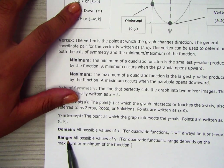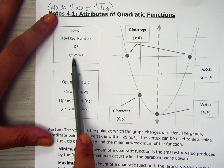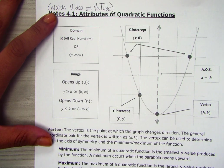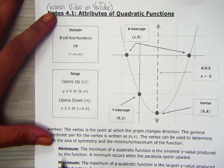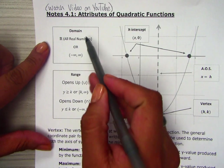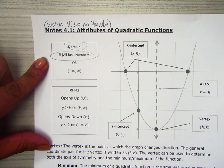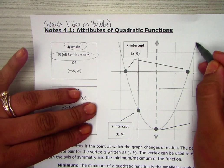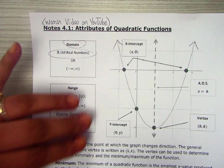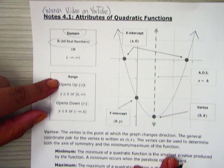The domain and range — similar to what we talked about in absolute value functions — we are going to write them in interval notation with minimum, maximum, and it could be all real numbers as well. In quadratics, the domain will always be all real numbers. Unless you have points at the end, there will always be arrows, and you will always have a domain of all real numbers, just like you did with absolute value.